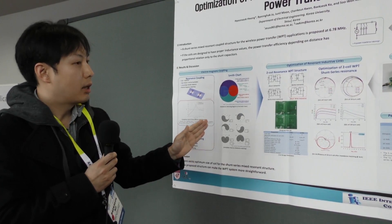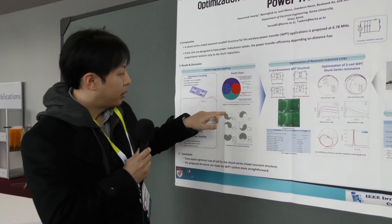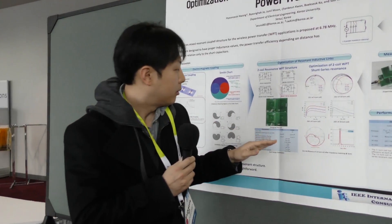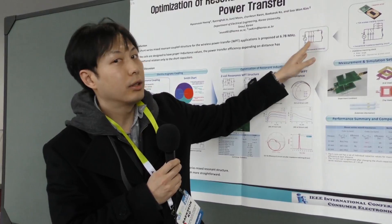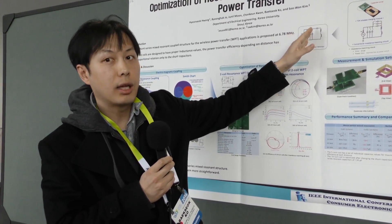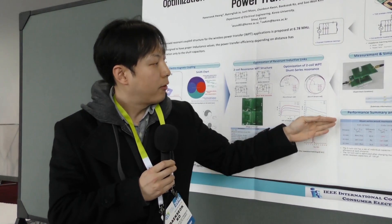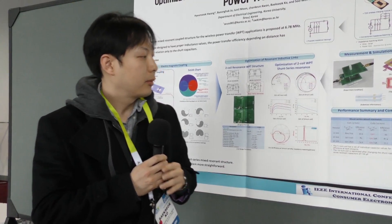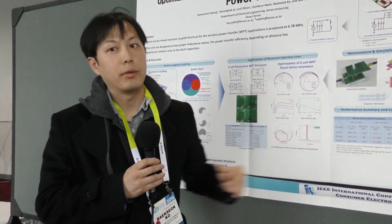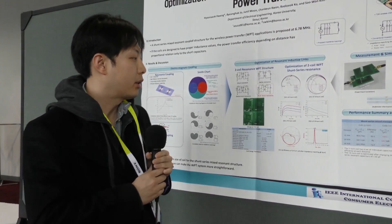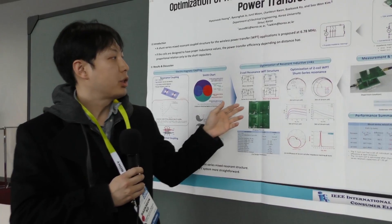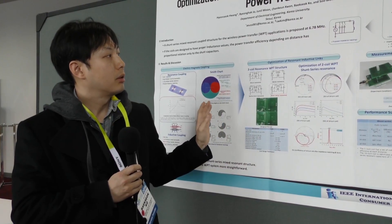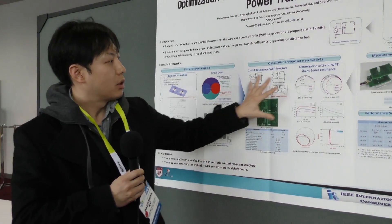The inductive impedance should be located on the upper side of the Smith's chart. We use only one shunt dynamic capacitor, and the performance summary and comparison show good values in measurement and simulation. We approach this using RF methodology inductive matching for Smith's chart values.